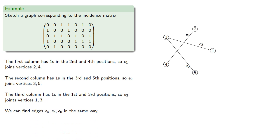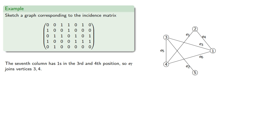And we can find edges E4, E5, and E6 in the same way. The seventh column has 1s in the third and fourth positions, so E7 joins vertices 3 and 4.